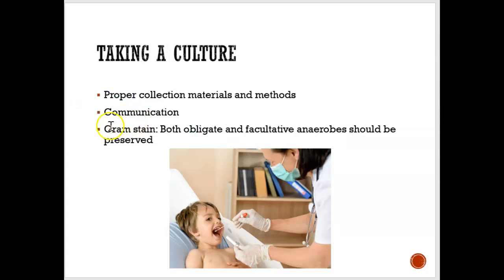So culturing and sensitivity testing: culturing is taking the swab to the lab and getting it tested to see which bacteria is present. Sensitivity testing is figuring out which antibiotic or medicine will kill that bacteria or infection. One of the ways they do this is by staining the bacteria — if it's purple, it's gram positive; if it's red, it's gram negative — and then there are specific antibiotics to treat each type.